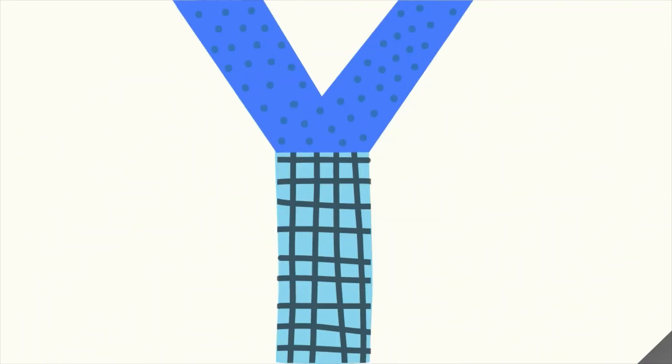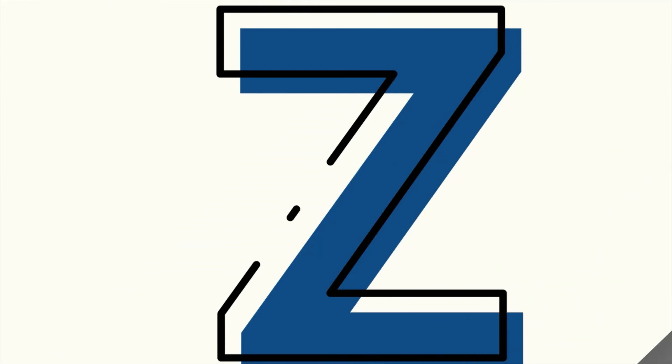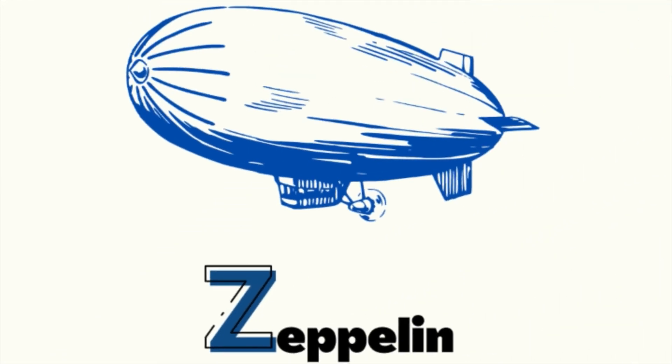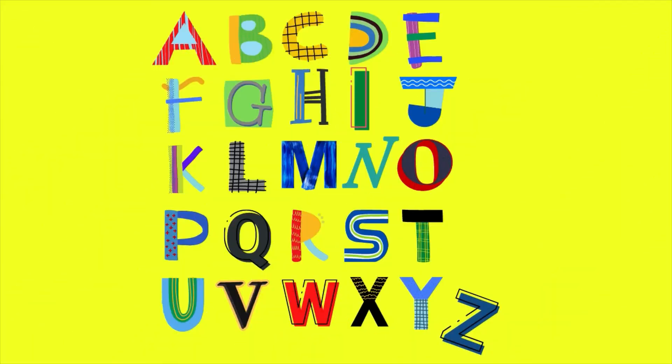X. Excavator. Y. Yacht. Z. Zeppelin. What letters do you see?